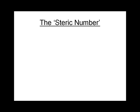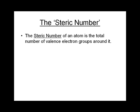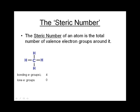So let's define something called the steric number. The steric number is the total number of valence electron groups around an atom. We've broken valence shell electron pairs into two kinds: bonding and non-bonding. In the CH4 or methane molecule, it has four pairs of bonding electrons. To find the steric number, we add the number of bonding electron groups to the number of lone electron groups — which in methane is zero — giving a steric number of four.